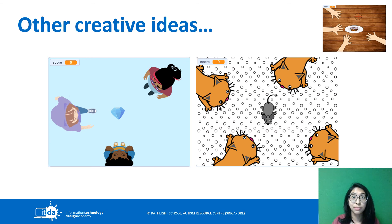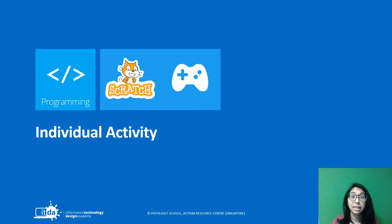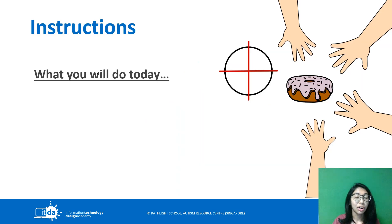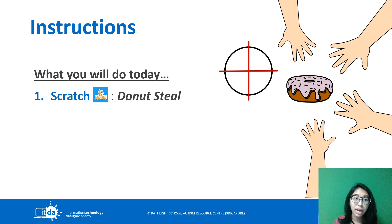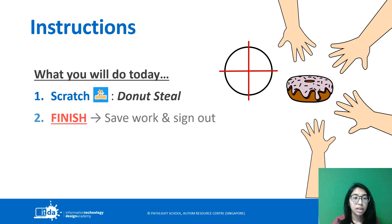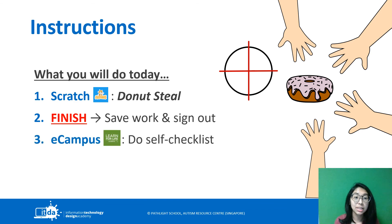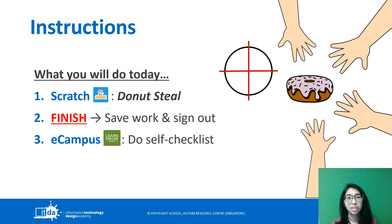Before we end this video, let me go through some basic expectations. For your activity today, go to Scratch, do your Donut Steel. Once you've finished, save your work, sign out of Scratch, go back to eCampus and do your self-checklist, so I know whether you understand or finished. Have fun today — I will see you in another lesson. Bye.